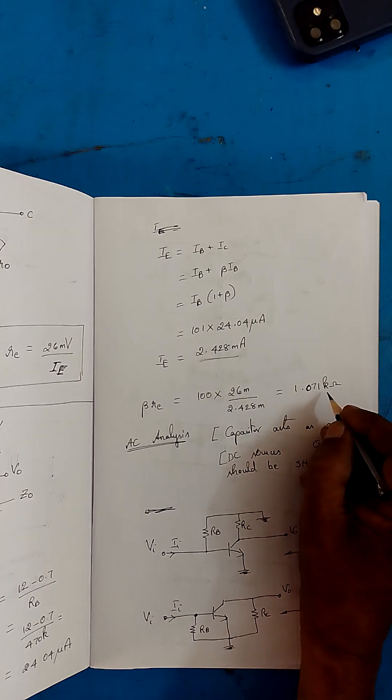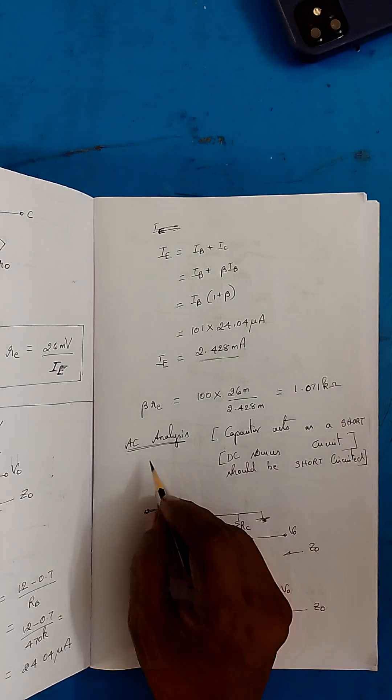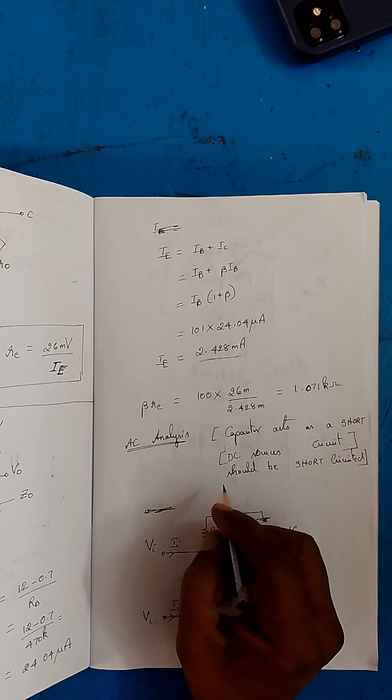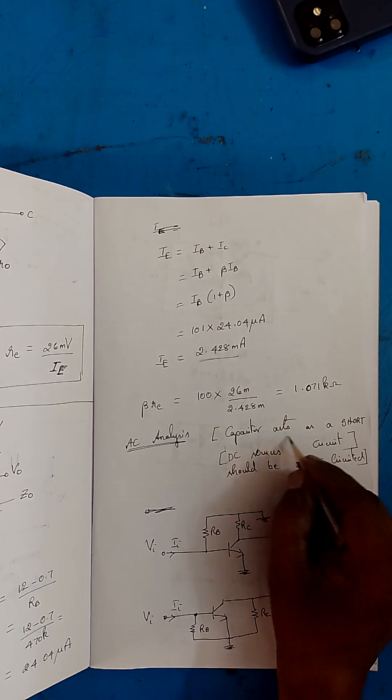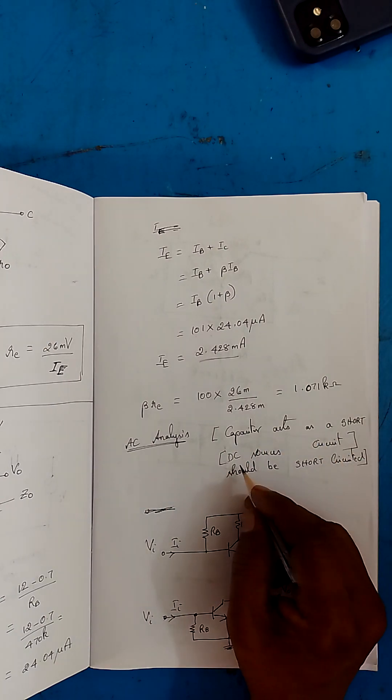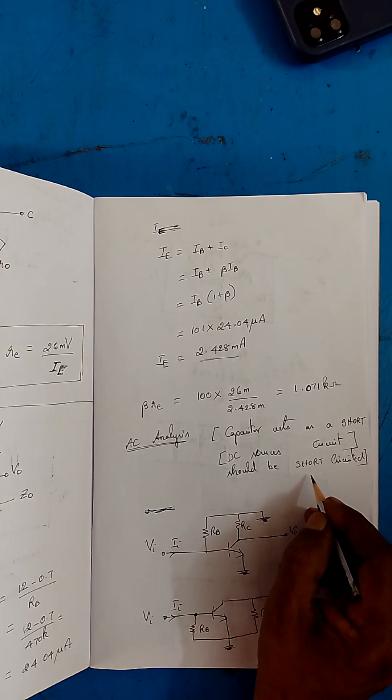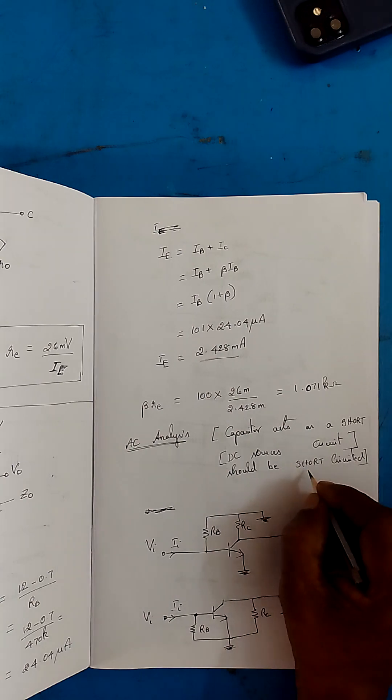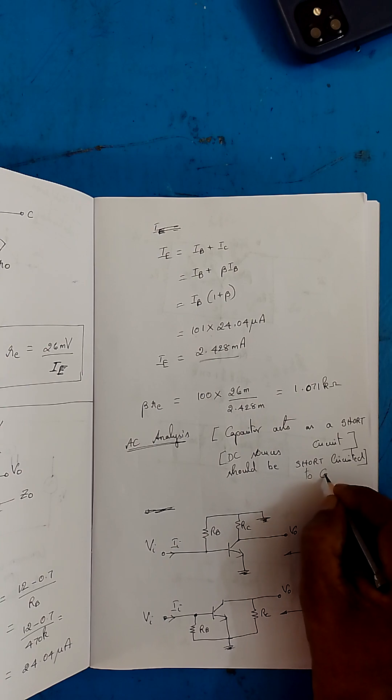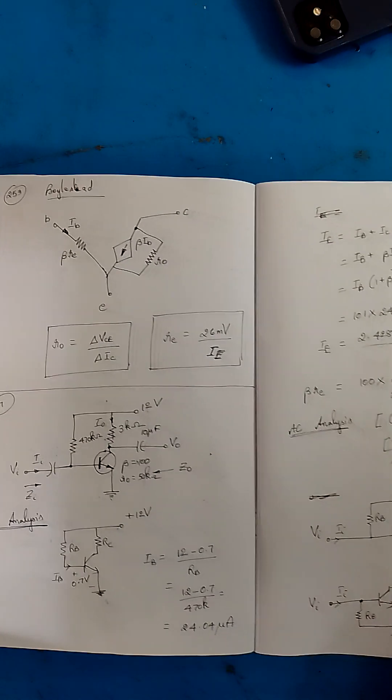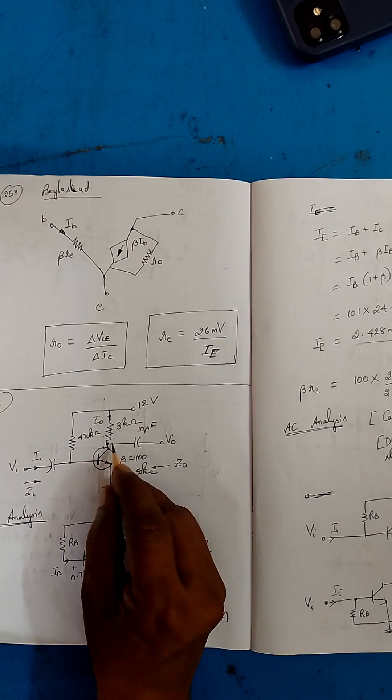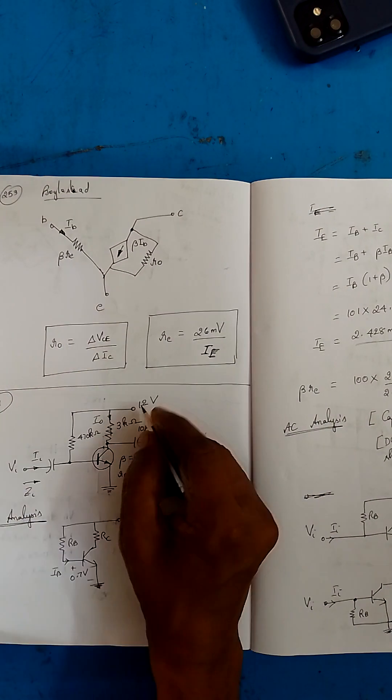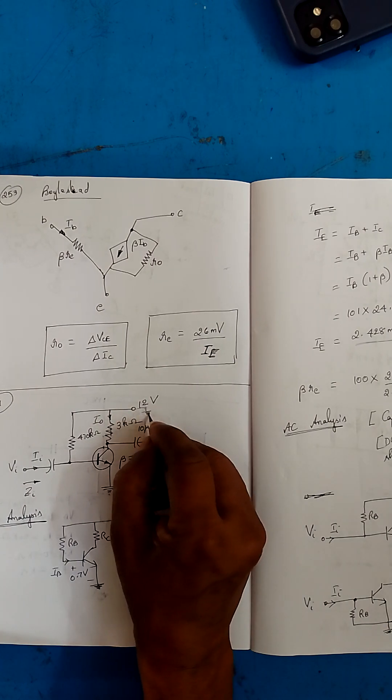Now we have to go for AC analysis. In AC analysis we have to keep in mind that capacitors act as a short circuit and all the DC sources should be grounded, connected to ground. So in AC analysis this will act as short circuit, this is short circuit, and this DC source will become ground.